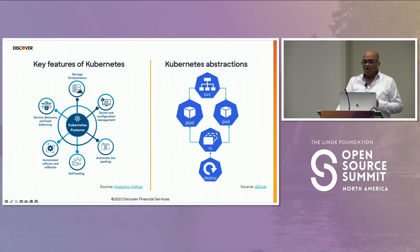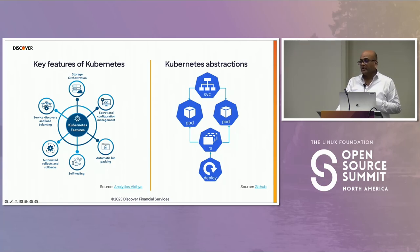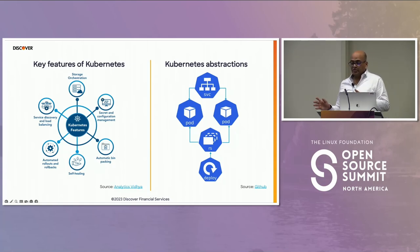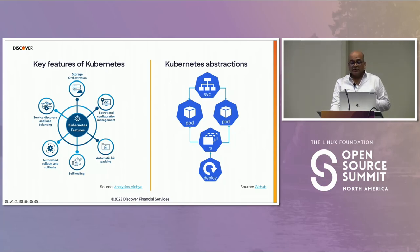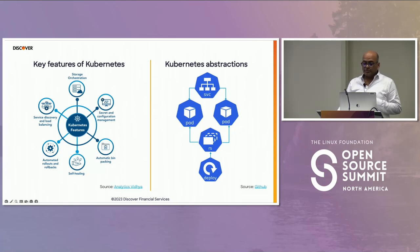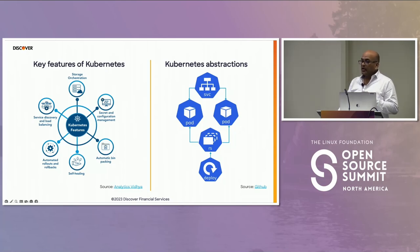Kubernetes offers robust configuration management capabilities, enabling you to manage application configuration data efficiently — you don't have to combine your application code with configuration code; it sits outside using ConfigMaps. Automatic bin packing is a significant feature where Kubernetes automatically places containers based on resource requirements, limits, and other constraints without compromising availability. It can mix critical and best-effort workloads to manage utilization and save more resources.